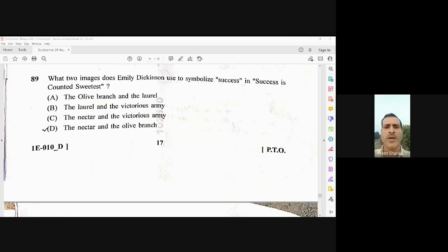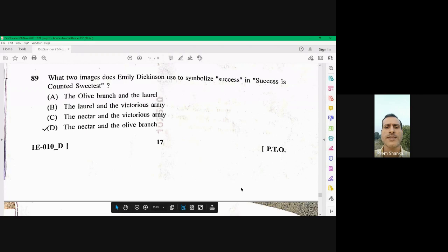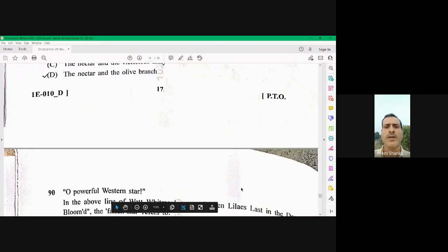Question number 89. What two images does Emily Dickinson use to symbolize success and success and success counted sweetest. Here the right option is the nectar and the victorious army. 89. Option number C.